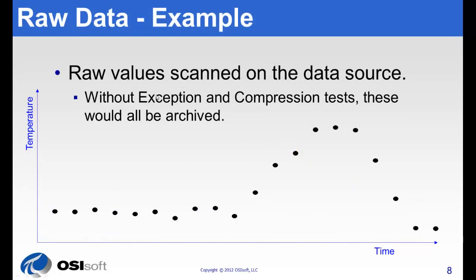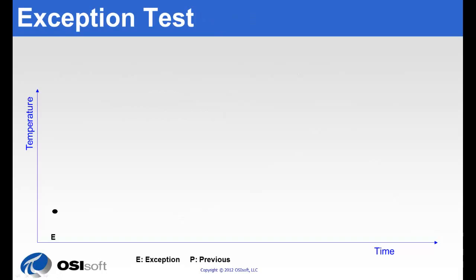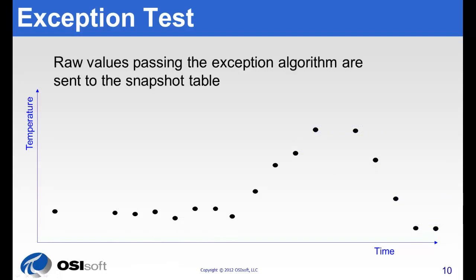Now this is easiest to see if you watch it in action. Here we have some raw values that were scanned at a data source, and we're going to see what happens as exception is applied to them.